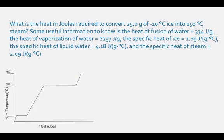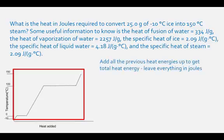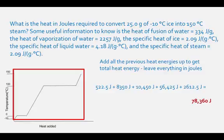The total amount of heat required to change 25.0 grams of solid ice at negative 10 degrees Celsius to steam at 150 degrees Celsius is the sum of all heat energies calculated: 522.5 joules plus 8,350 joules plus 10,450 joules plus 56,425 joules plus 2,612.5 joules, which equals 78,360 joules of heat energy.